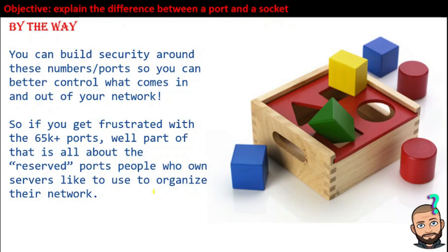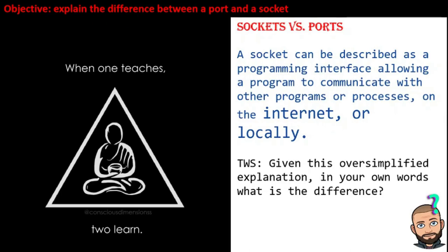Why have ports if we already have IP addresses? Not only because a computer can run multiple processes — we talked about over 65,000 ports — but this idea that we assign specific ports for specific processes can help us build security around these ports. So don't get frustrated with the fact that there are 65,000 of them. You don't have to memorize them. There's just a slew of reserved ports that you'll probably want to know if networking is your future or present. Let me explain what a socket is, then we'll look at some of those reserved ports.